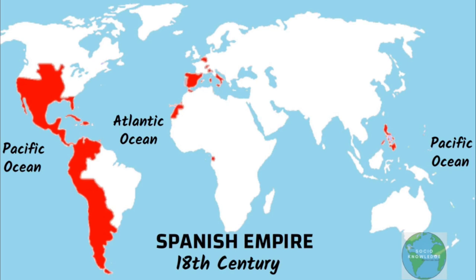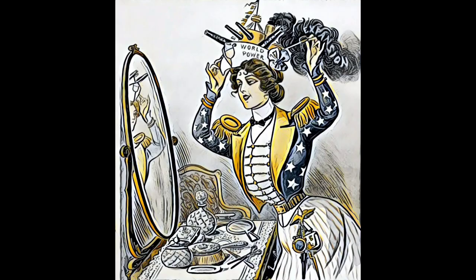In the 18th century, the Spanish empire was at its peak and it was so large that it was called the empire in which the sun never sets.